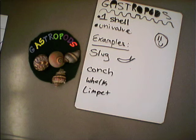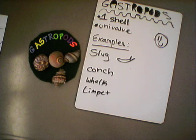Gastropods. Gastropods have one shell, which gets them the name univalve. Some examples are slugs, conches, whelks, and limpets.